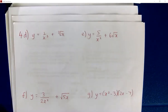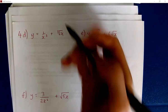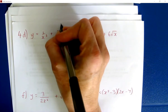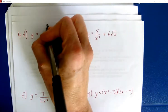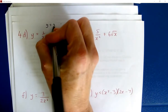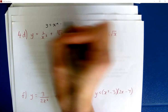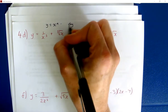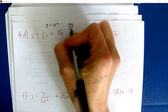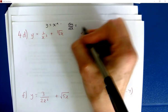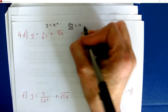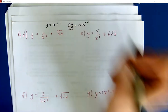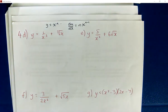Let's just remember what the rule is — I've just got it down at the top. So if we have y as some power of x, then dy/dx becomes: we bring the power down, we write x, and we reduce the power by 1.